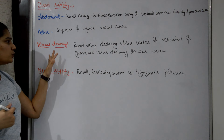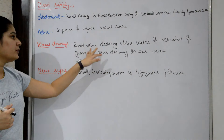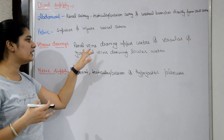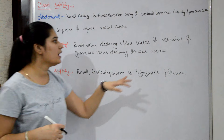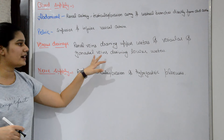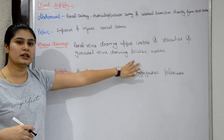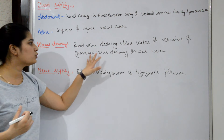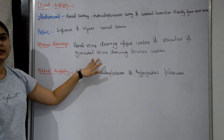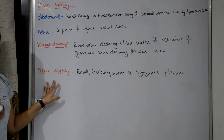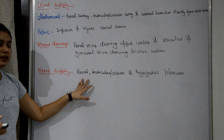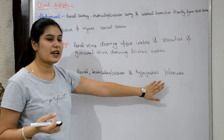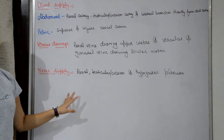For venous drainage, the renal veins drain the upper ureter, while the vesicular and gonadal veins drain the lower ureter. For nerve supply, the renal, testicular or ovarian, and hypogastric plexuses provide nerve supply to the ureters.